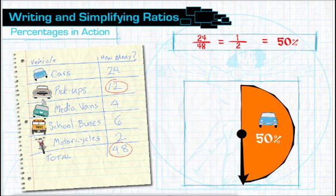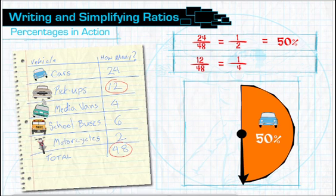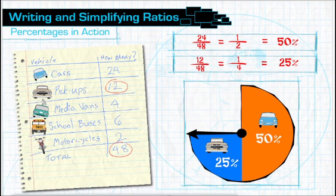Taylor counted twelve trucks. Following the same procedure she used for cars, Taylor determined that the ratio for trucks to total vehicles is twelve to forty-eight, or one truck for every four vehicles. This is equivalent to twenty-five percent of the circle.